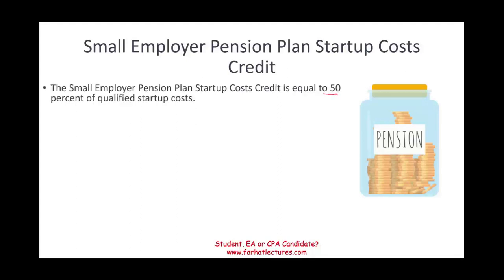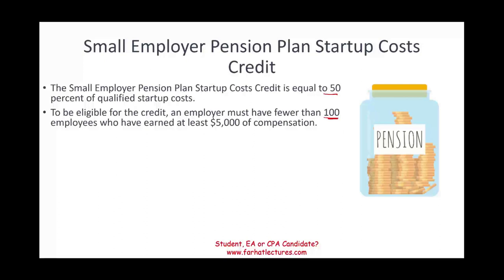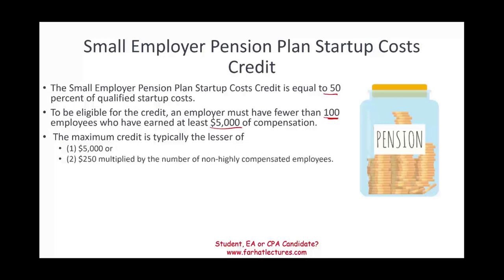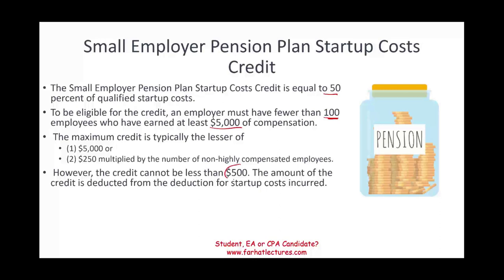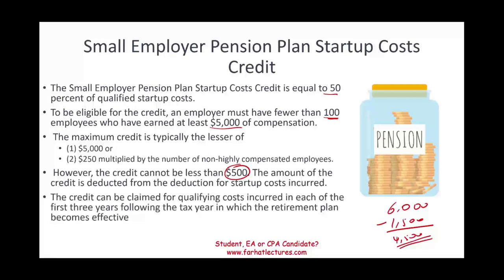The credit is up to 50% of qualified startup costs. To be eligible, an employer must have fewer than 100 employees who have earned at least $5,000 in compensation — this is not designed for large companies. The maximum credit is the lesser of $5,000 or $250 multiplied by the number of non-highly compensated employees, but the credit cannot be less than $500. The credit amount is deducted from the deduction for startup costs incurred. The credit can be claimed for qualifying costs incurred during each of the first three years following the tax year in which the retirement plan becomes effective.